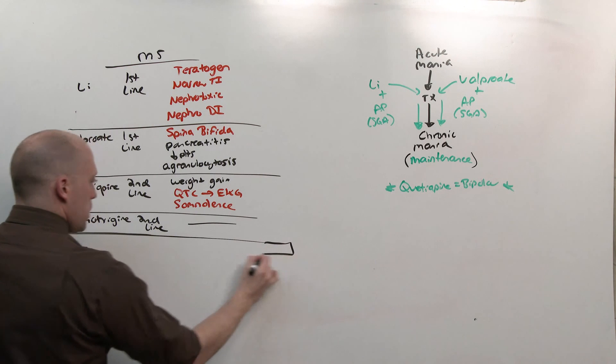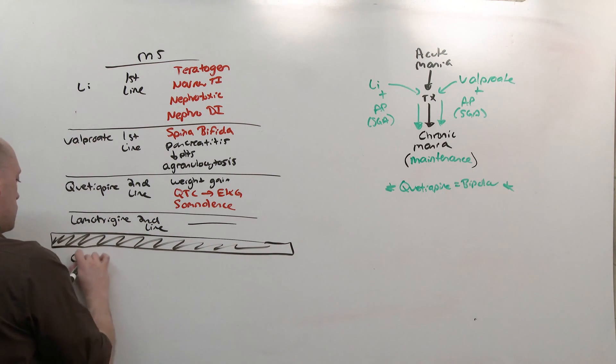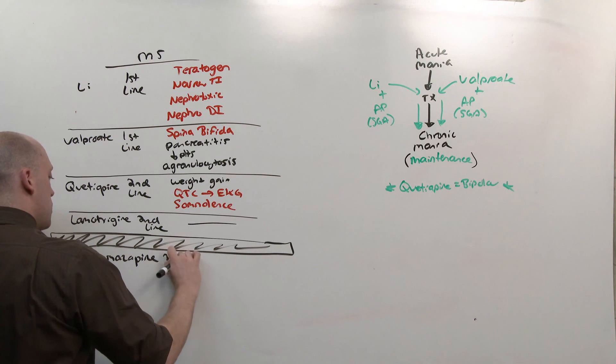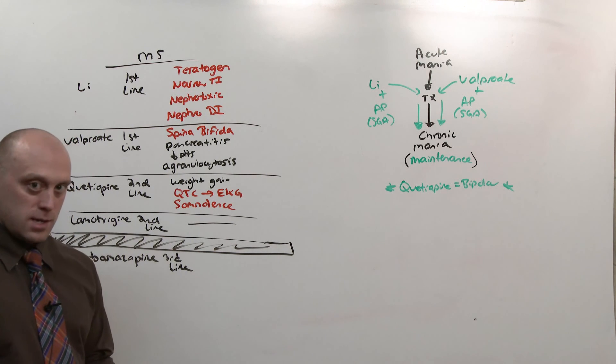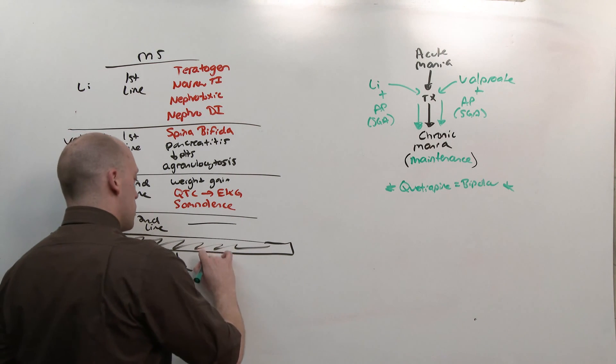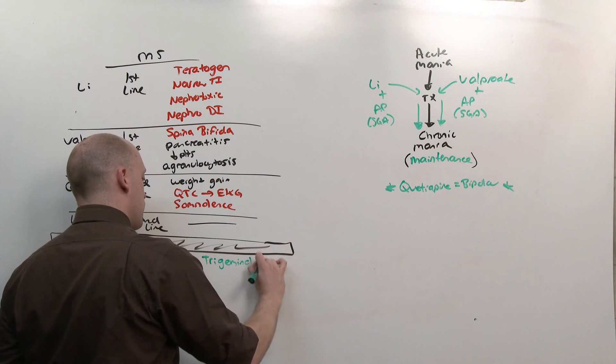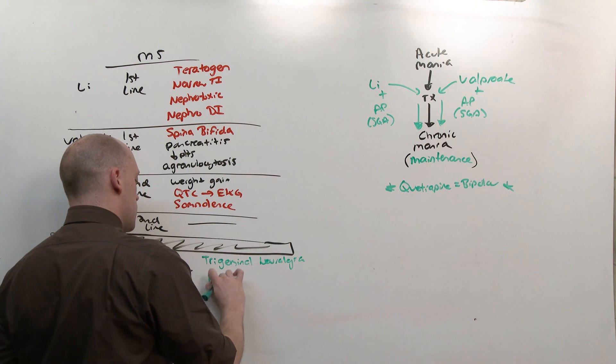The other big switch was that they're trying to get rid of carbamazepine being used for mood stabilization. It can still be used on your test, but should be considered moving forward a third line agent. Instead, it should be used for its other indications: trigeminal neuralgia, which is tic douloureux, or absence seizures in kids.